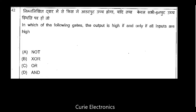Question number 42: In which of the following gates is the output high if and only if all inputs are high? That is definitely the AND gate. For an AND gate, only when all inputs are high do you get a high output. So the AND gate is the right answer.